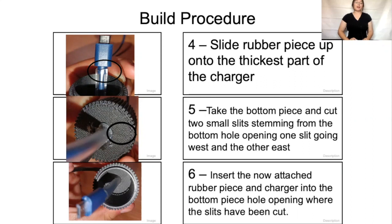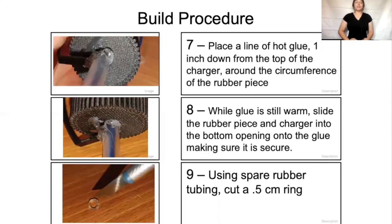Moving over to procedure 5, we want to take the bottom piece and cut two small slits stemming from the bottom hole, going across west and east. This is because it is difficult to insert the charging cord without difficulties putting the thickest part inside the hole. Procedure 6: now we want to attach the rubber piece and charger into the bottom piece by sliding in the charging cable as well as the rubber tubing inside the hole. Procedure 7: place a line of hot glue one inch down from the charger around the circumference of the rubber piece, attaching the rubber cord and rubber tubing onto the bottom piece to ensure it doesn't move.